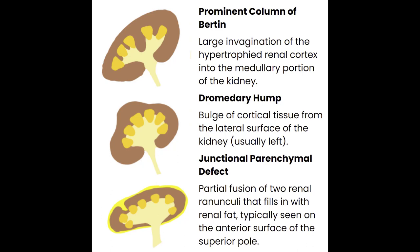Section 8.4: Renal Variants. For the kidney discussion, it's important to distinguish a renal variant from a congenital anomaly. Renal variants lead to relatively inconsequential changes to the normal appearance of the kidney, while congenital anomalies carry more risk for associated pathology and will be covered in the pathology unit. The first variant is the prominent column of Bertin — a large invagination of hypertrophied renal cortex into the medullary portion of the kidney. Normally columns of Bertin appear between all of the pyramids; when a prominent column of Bertin occurs, the column becomes almost double the expected size.